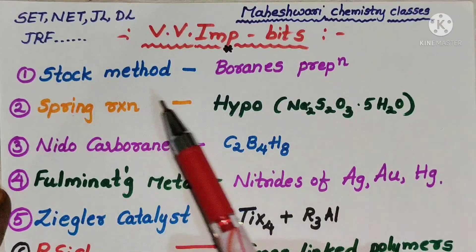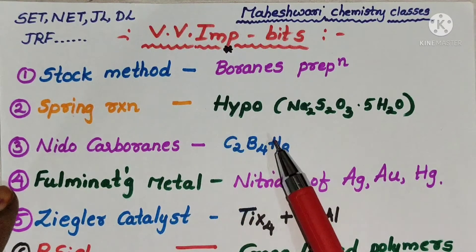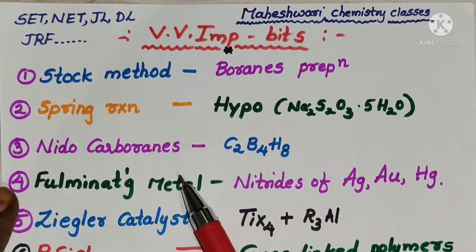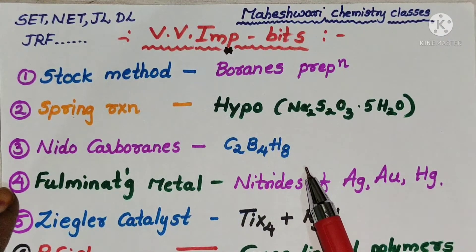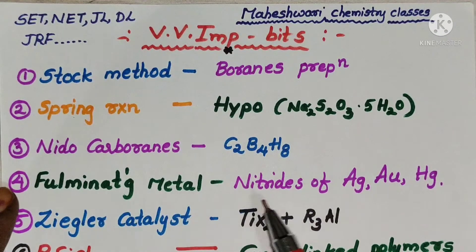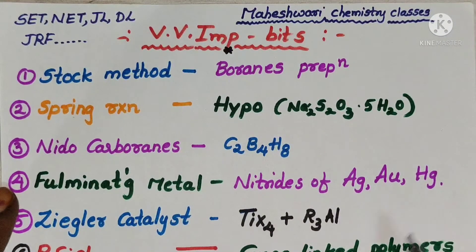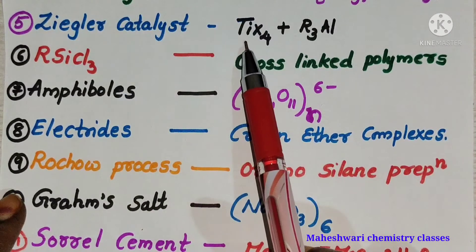Here, stock method for boranes preparation, spring reaction for hypo, nido carboranes C2B4H8, fulminating metal nitrates of silver, gold, and mercury, Ziegler catalyst titanium tetrahalide trialkyl aluminum mixture.